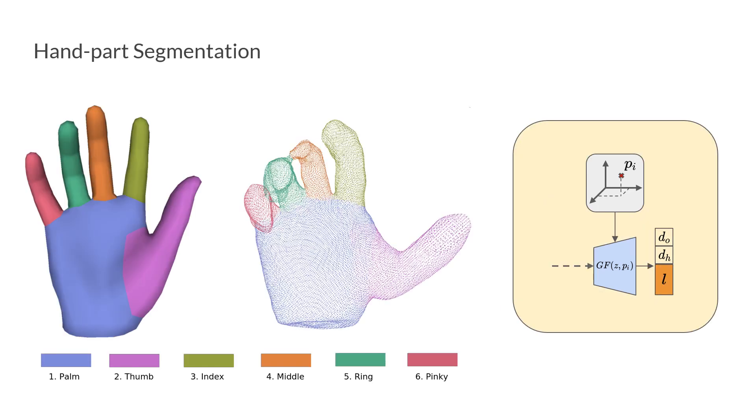However, the shape obtained from the implicit representation does not have point correspondence, which might limit its application for downstream tasks.